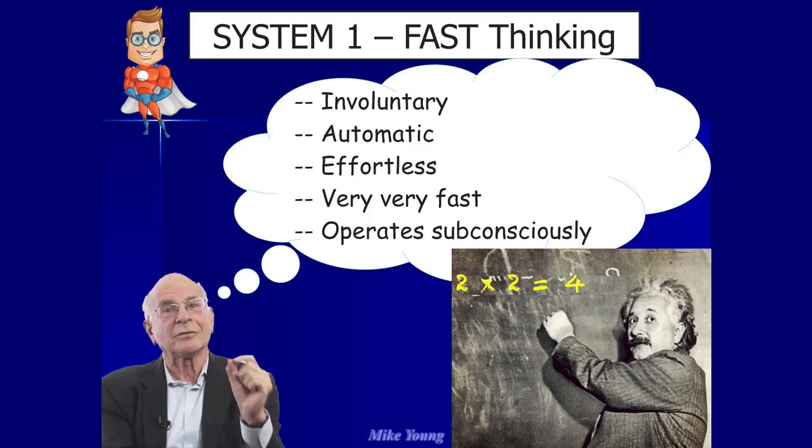System 1 is fast thinking. It is involuntary, automatic, effortless, very very fast, and it's operating at the subconscious level — you don't even know what's happening. If someone says what's two times two, it's four. You don't even have to think about it. That's already in your memory. That's instant — that's your System 1 answering that question. You could be driving a car, you could be doing a lot of different things — you'll know that answer.